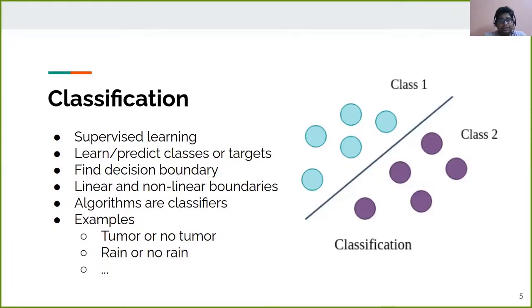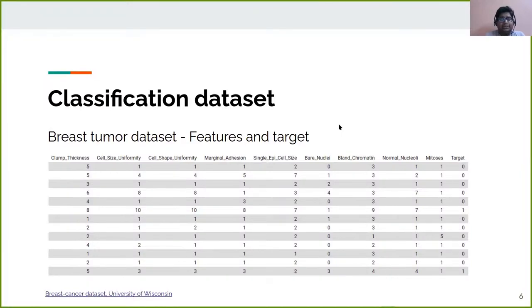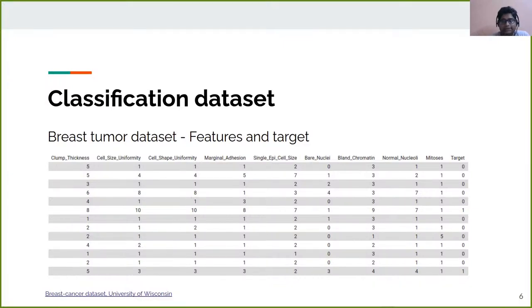An example dataset for classification can be seen in this slide. We can see a table where each column is a feature. This dataset is a breast tumor dataset, so the features are related to breast tumor — for example, clump thickness, cell size, uniformity, and so on. The last column is a target, which indicates whether each row is classified as cancer or not, breast tumor or not. A class of zero says there is no tumor; a class of one says there is tumor.